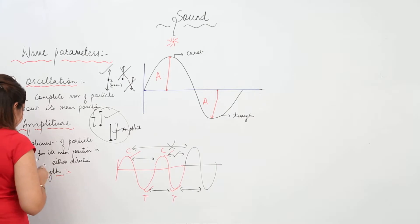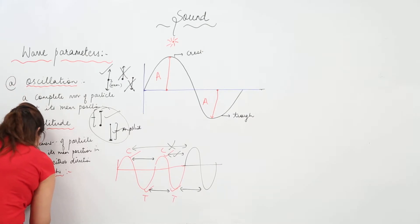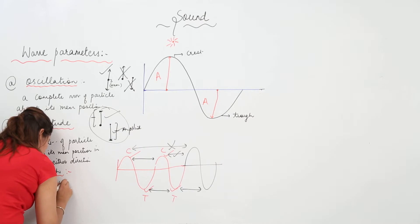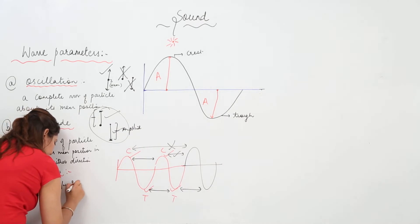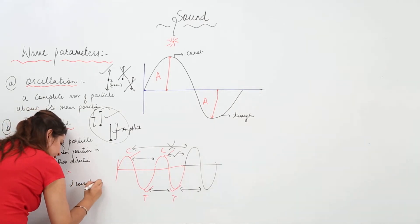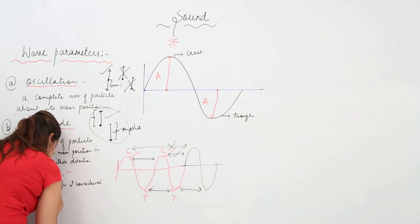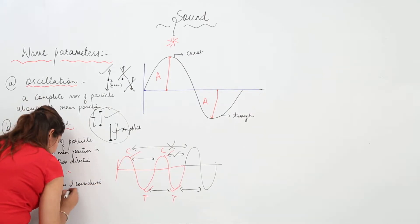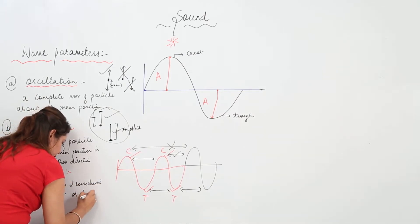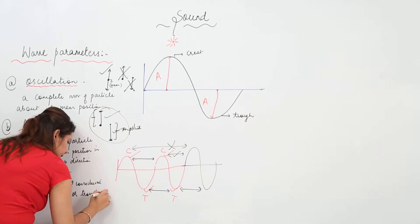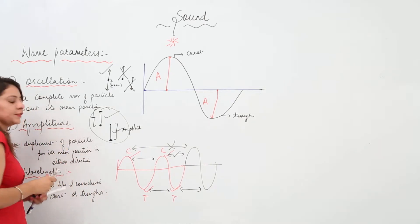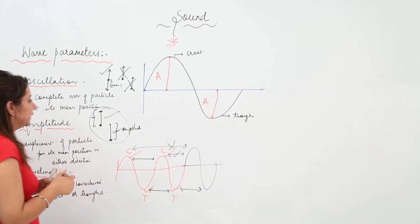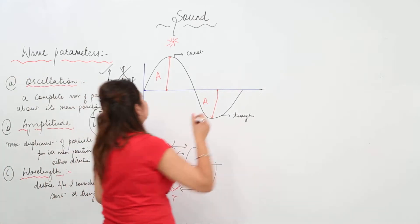So what is wavelength? It is the distance between two consecutive crests — consecutive means one after another — or two consecutive troughs. This is the third wave parameter: wavelength.